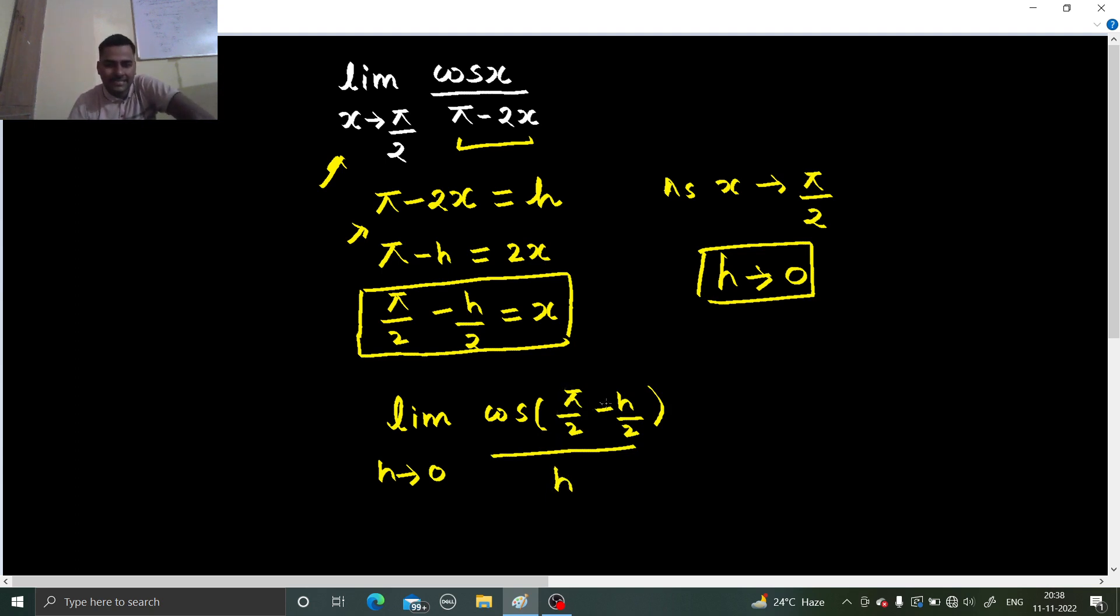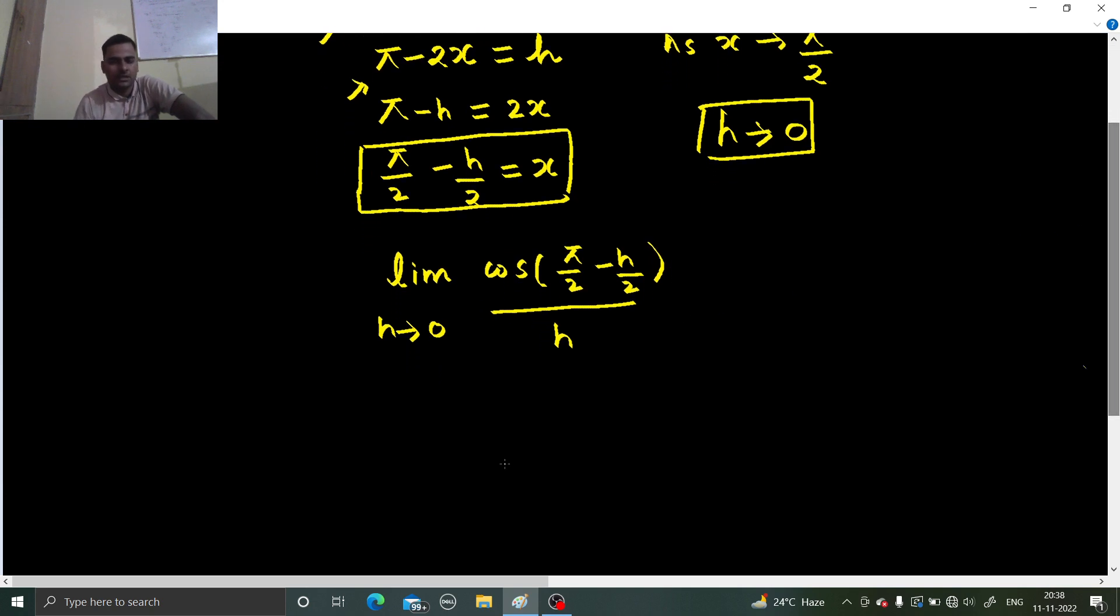Cos 90 minus theta is sin theta. So this can be written as limit h tending to 0, sin h by 2 divided by h.